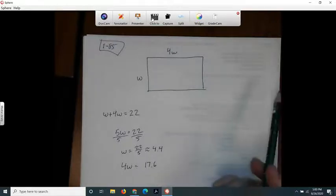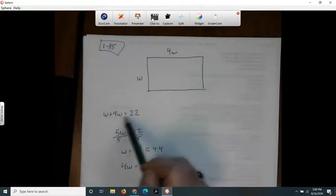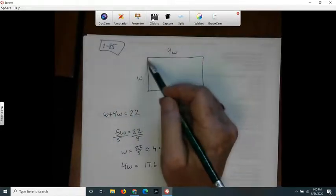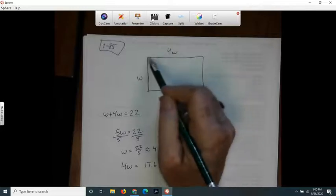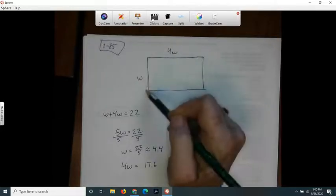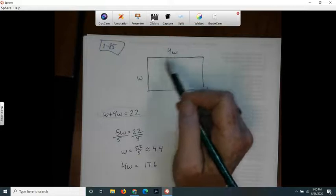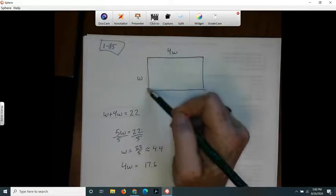It said write one or two equations. I just wrote one. I just labeled it. I knew that if this is the width, then this is the length. I know that the length is four times W. I wrote this for the width and this for the length.